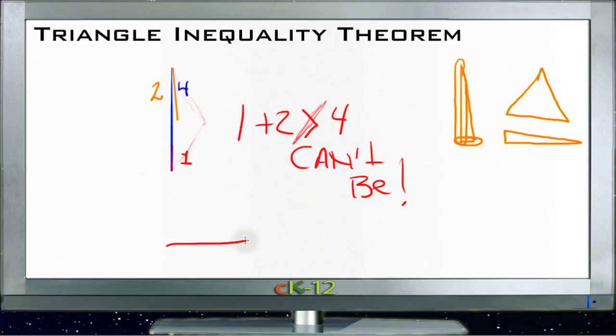If my third side over here that I'm trying to put in is like, you know, like this one here—if we call this side 2 and 3 and this one 1—there's no way this side 1 over here is going to be able to make this into a triangle. Because there's no way it's going to take the distance from this point to this point.